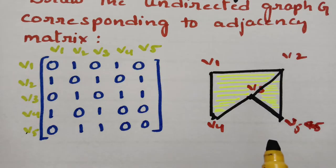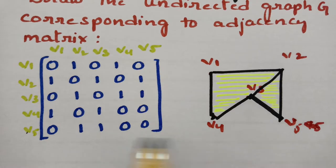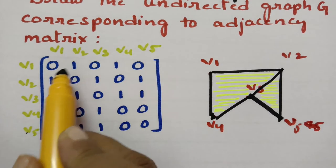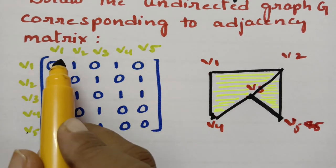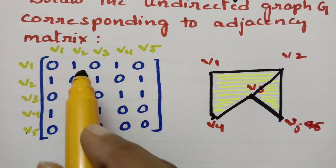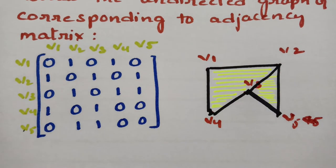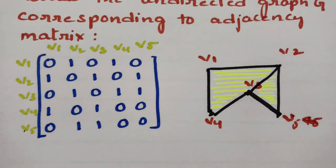Whereas it will be different for a directed graph. In this case, if we have 1, we have to take 1 edge. If we have 0, there is no problem — we have to leave it as it is.